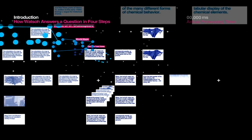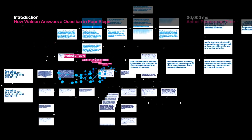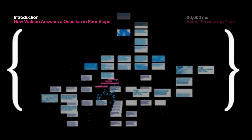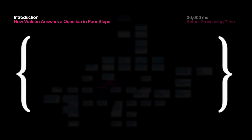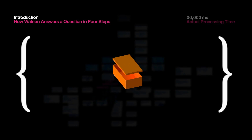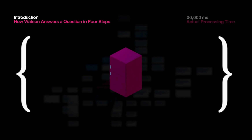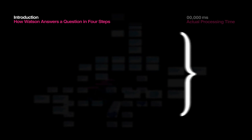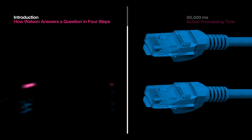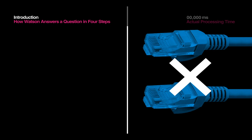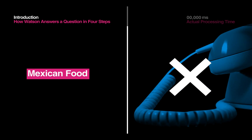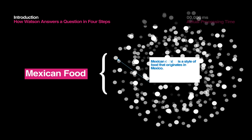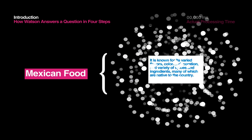Like our brains, Watson's knowledge base is entirely self-contained — except while our brains fit in a shoebox, Watson's brain takes up more space than eight large refrigerators. When Watson answers a Jeopardy! question, there is no internet or helpline, so Watson consumes a steady diet of information to prepare for a game.